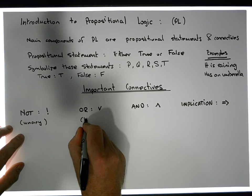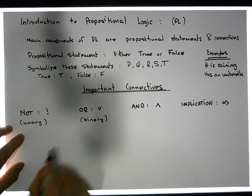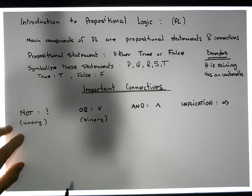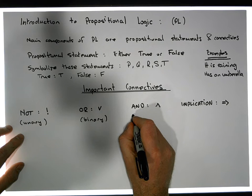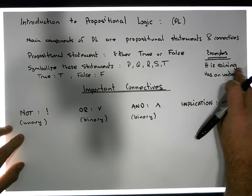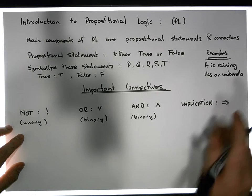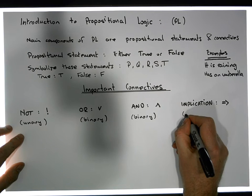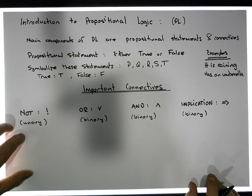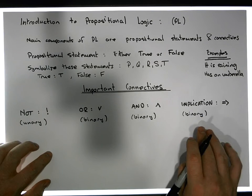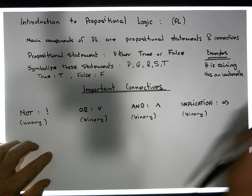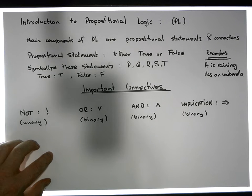The OR operator is what's known as a binary operator — it operates on two propositions. For example, 'it is raining or I have an umbrella' — two propositions. The AND is also a binary operator: 'it is raining and I have an umbrella.' And the implication is also binary — something like 'if it is raining, then I have an umbrella.' It takes two propositions.